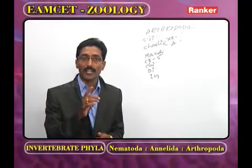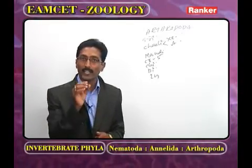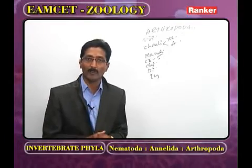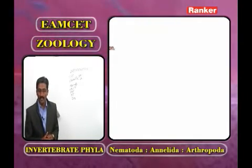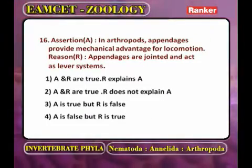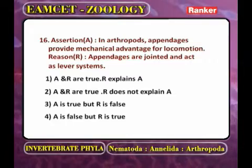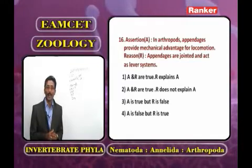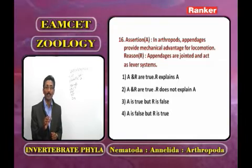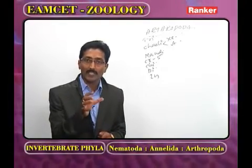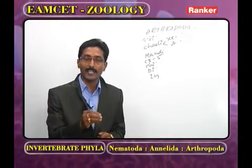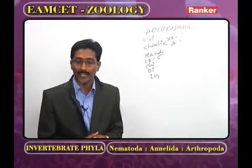Pectins help in food collection and act as sense organs. Assertion: in arthropods, appendages provide mechanical advantage for locomotion. Reason: appendages are jointed and act as lever systems. In Arthropoda, voluntary (striated) muscles are in the form of bundles acting as levers, attached to the endoskeleton and helping in locomotion. Both the assertion and reason are correct and the reason explains the assertion.